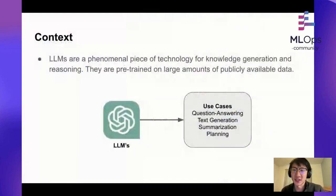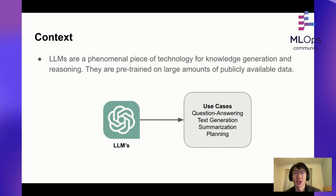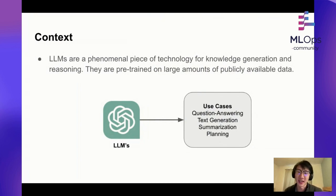The basic context here is that LLMs are a phenomenal piece of technology for knowledge generation and reasoning. They're pre-trained on large amounts of publicly available data, and you've all seen the amazing capabilities of LLMs by just playing around with stuff like ChatGPT. They can answer questions, generate new pieces of content, summarize stuff for you, and you can even use them as planning agents — basically having them perform actions, get a response, and perform more actions over time.